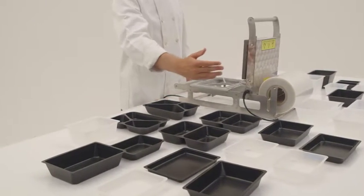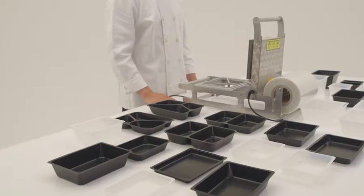The 539S machine can seal our range of group 3, 4, 6 and 8 trays, giving you a choice of 30 different tray sizes.